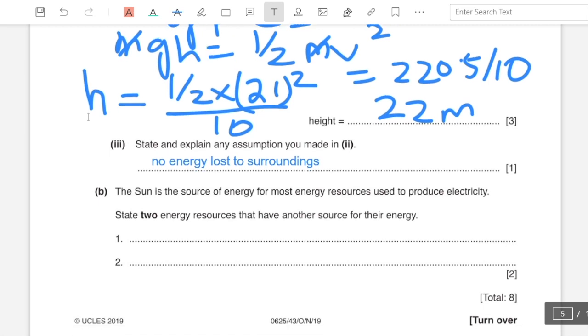Part b: the Sun is the source of energy for most energy resources used to produce electricity. State two energy resources that have another source for their energy. They can be tidal energy and nuclear energy.